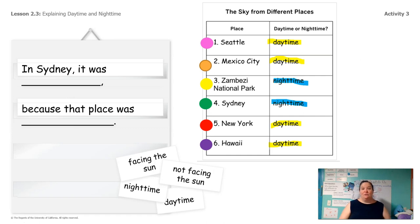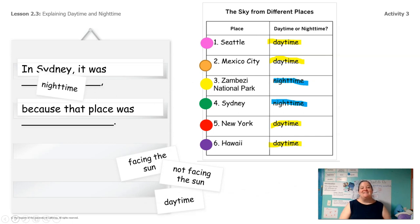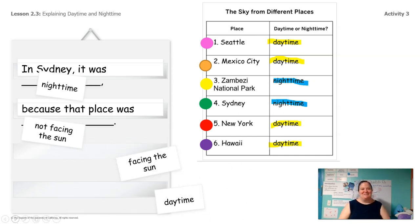Let's try it again with Sydney. We can look at our table and see if it was daytime or nighttime in Sydney. In Sydney, it was nighttime. And why was it nighttime in Sydney? Was the place facing the sun or not facing the sun? Not facing the sun. So let's read it all together: in Sydney, it was nighttime because that place was not facing the sun. Nice work. I really encourage you guys to go through and make these sentences with each of our places: Seattle, Mexico City, Zambesi, Sydney, New York, and Hawaii. You can even do other places that you know about.